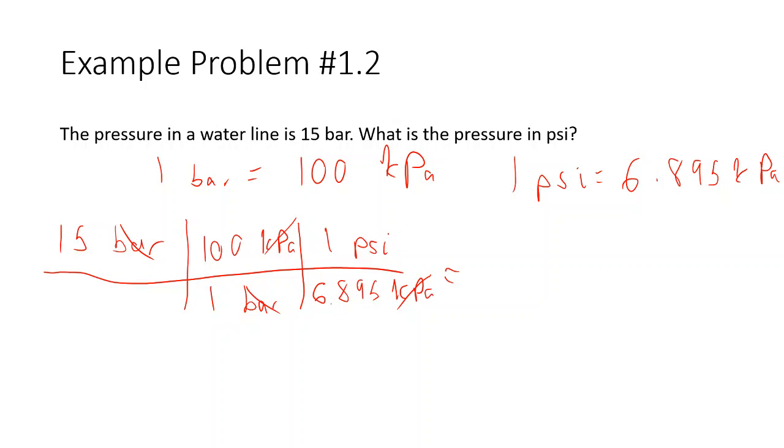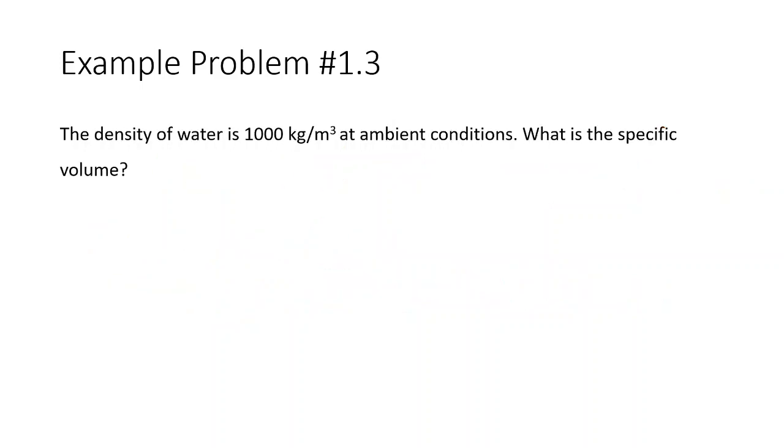So then if I was to multiply and divide this out, I would do 15 times 100 divided by 6.895 and my final answer would be 217.55 psi. This is my pressure. So just a two-step process, but again, pretty straightforward unit conversion.